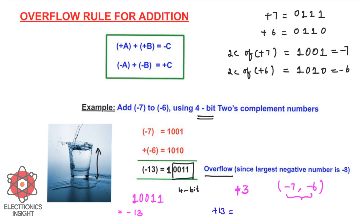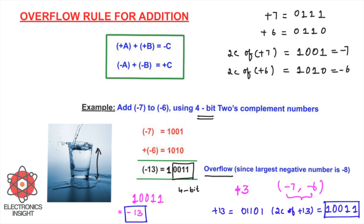The 5-bit result 10011, representing −13, confirms overflow. We can check this another way: the range of a 4-bit two's complement number is only −8 to +7, and −13 clearly falls outside this range. Also, intuitively, −7 plus −6 equals −13, which we immediately know cannot be accommodated in a 4-bit two's complement representation — so it is obviously an overflow.